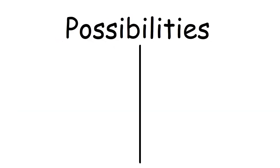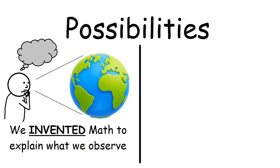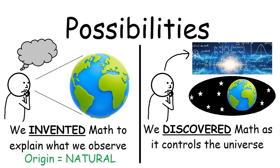There's two possibilities, really. One is that math is just something we invented to explain what we observe in the natural world, and that would mean the origin of math is natural. But the other possibility is that math is already there because it controls the universe and we've discovered it. And if that's true, then the origin of math is supernatural.